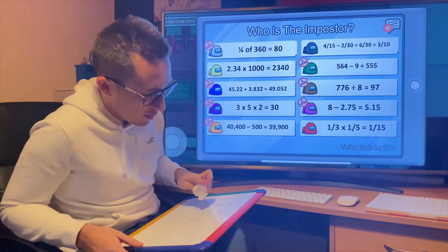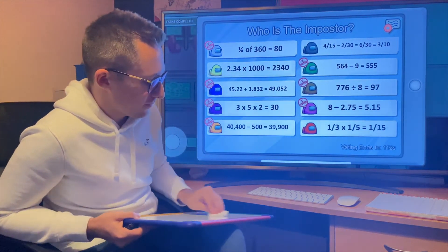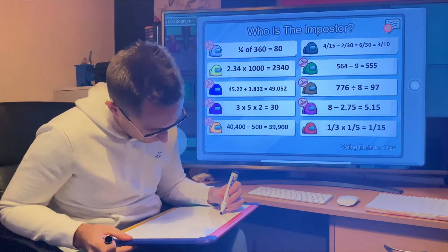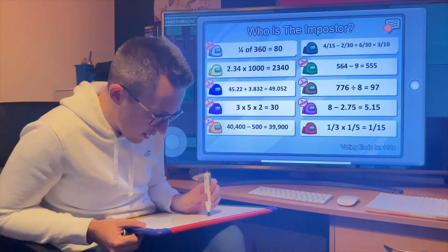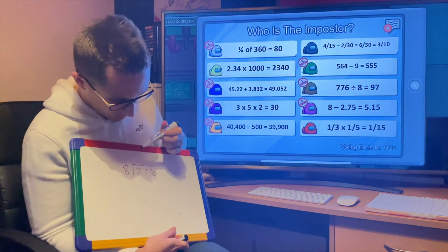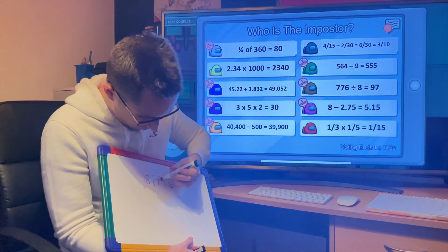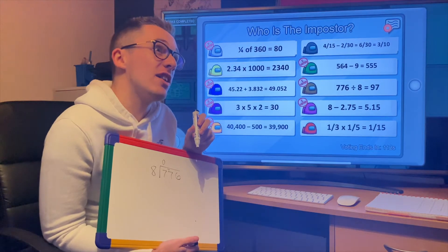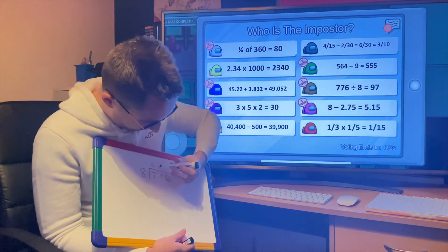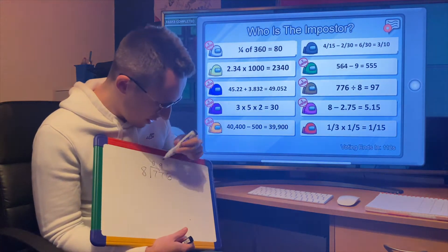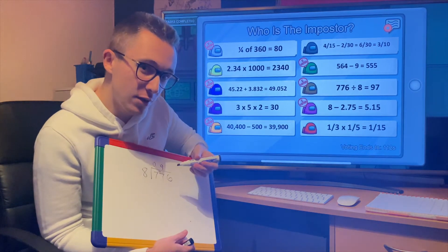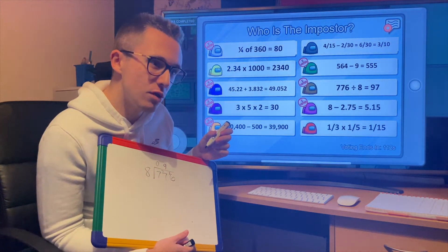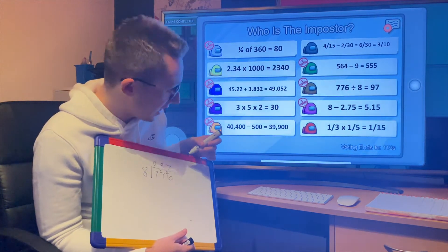Next one, 564 take away 9. Yep, that looks good to me. Brown: 776 divided by 8. We're going to have to do this bus stop because I don't know that one. 8 doesn't go into 7, so we carry it. 8 into 77—well, 8 times 10 would be 80, but that's too high. So 8 times 9 is 72. 8 times 9 is 72, but I wanted 77, so we've got 5 left over. We put the 5 here. 8 into 56 goes 7 times. So my answer is 97. Lovely.